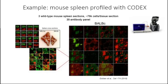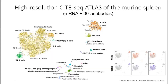This is a dataset published in the original CODEX technology paper in 2018 from the lab of Gary Nolan. The data consists of three wild-type mouse spleen sections, approximately 75,000 cells in each tissue section, profiled with CODEX using a 30-antibody panel. We used that data as a query dataset and a CITE-seq dataset generated from the mouse spleen using the same 30-antibody panel as the reference.